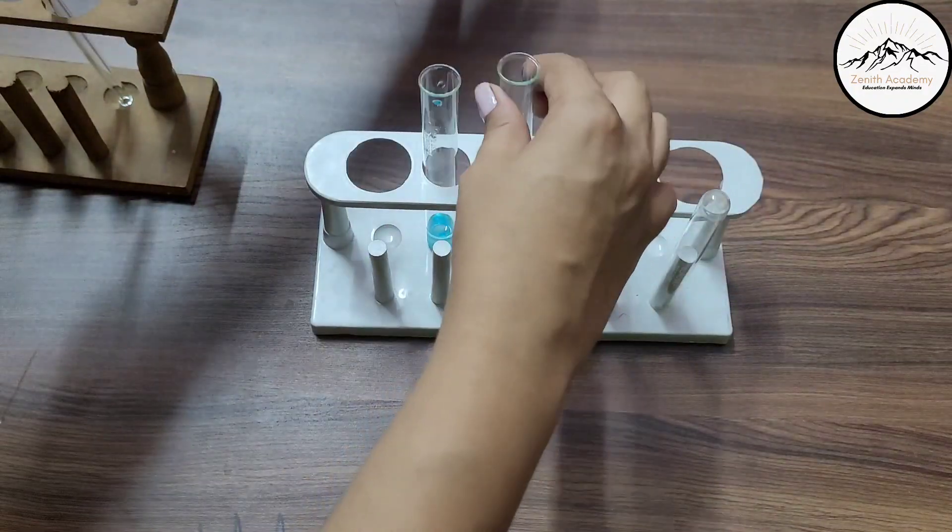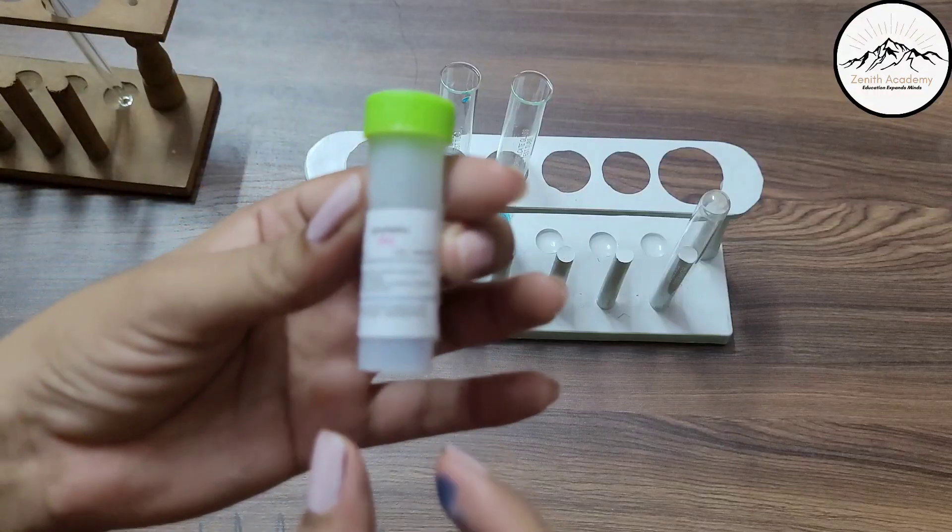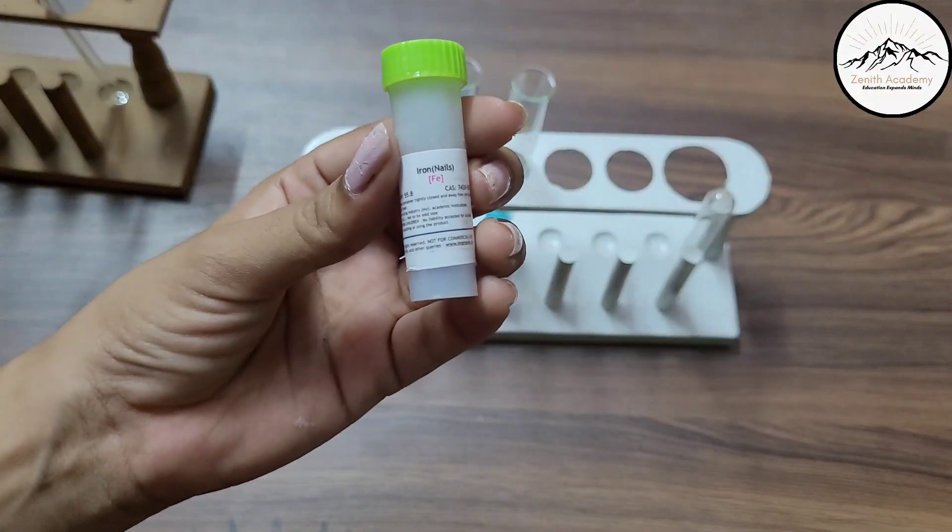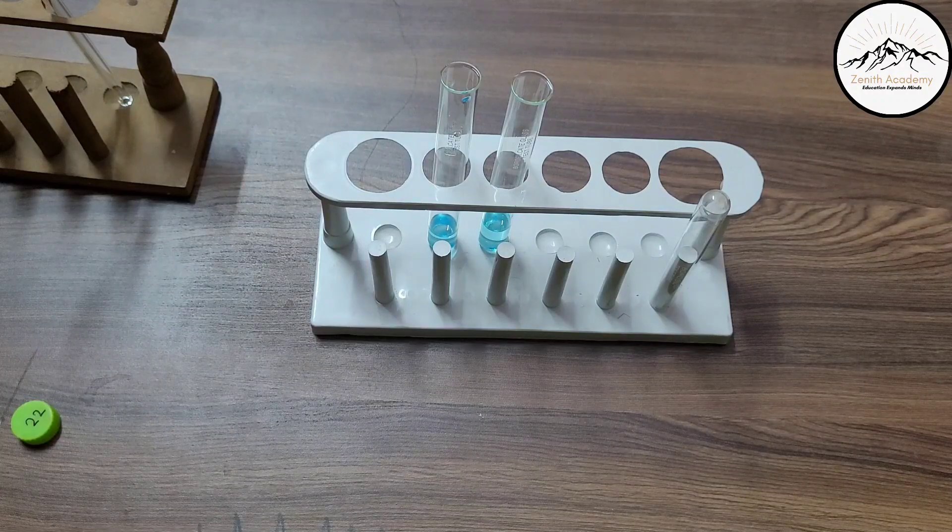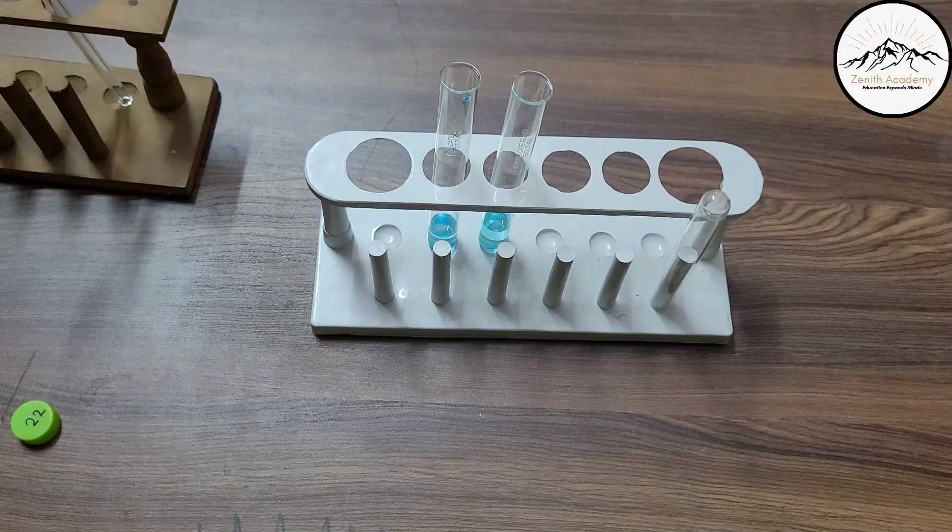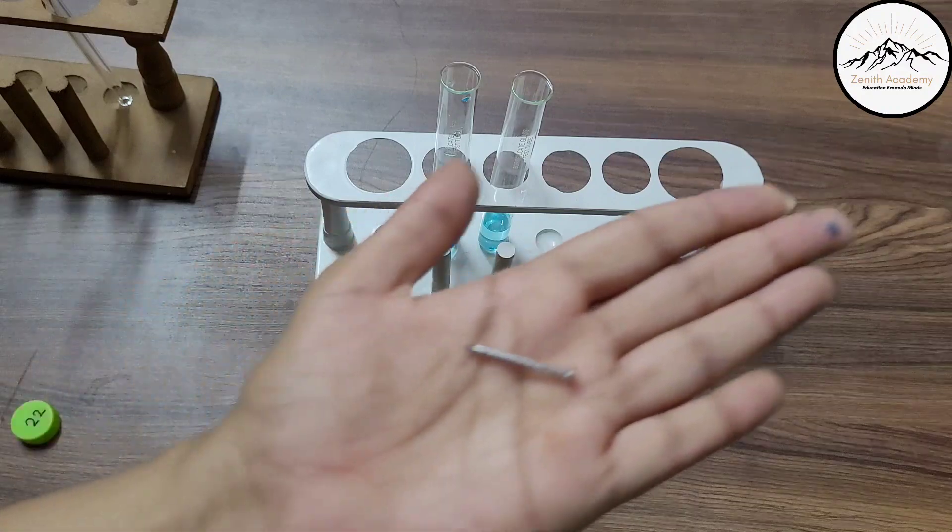Now what we will do is we will add an iron nail. So see here I hope you can see this. This is iron nail. So I will add the iron nail in one of the test tubes. See here.